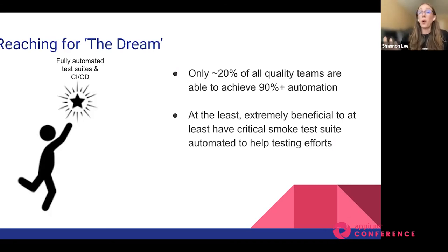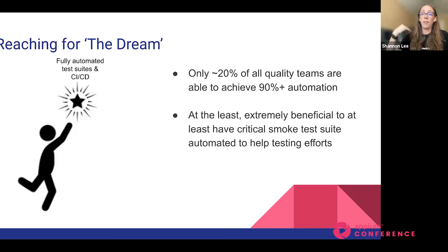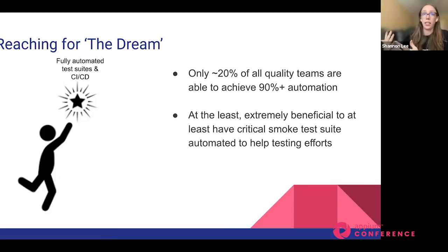Only 20% of quality teams are able to achieve 90% or more in automation, so it's only about a fifth of us that can actually achieve full automation. At the very least, it's beneficial to have your critical smoke test suite automated to help testing efforts, because even if you can't achieve automation everywhere, having your critical test cases automated can help significantly.